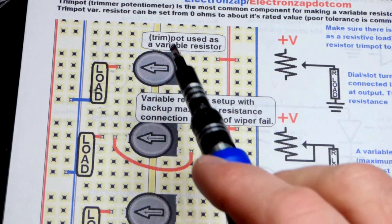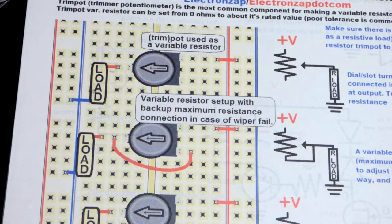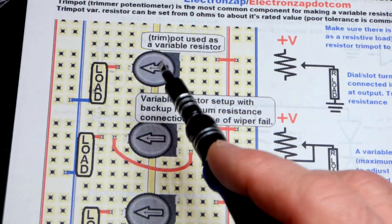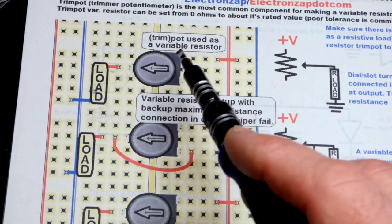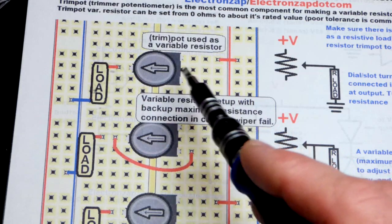So now in this video we're going to look at the trim pot component. We're going to look at this drawing I did a long time ago first, and so ultimately the trim pot is a variable resistor.